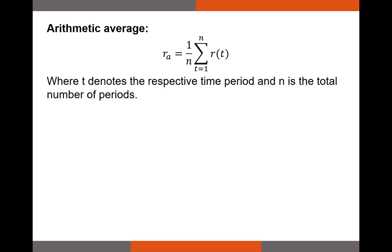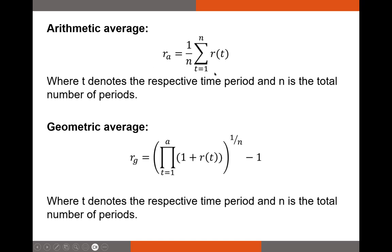Now let's talk about arithmetic versus geometric averages, both used in investments. An arithmetic average is simply the sum of all values divided by the number of values — just the sum of all returns divided by the number of periods. The geometric average return is the average return you would need in each period to go from a starting amount to an ending amount. For example, going from $1,000 to $2,000 over five years gives a geometric average return of 14.87%.